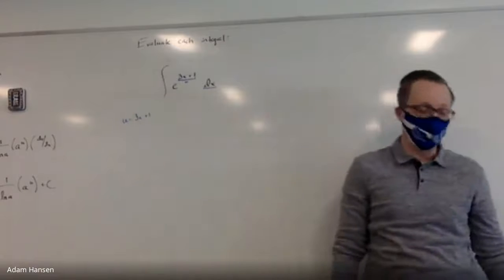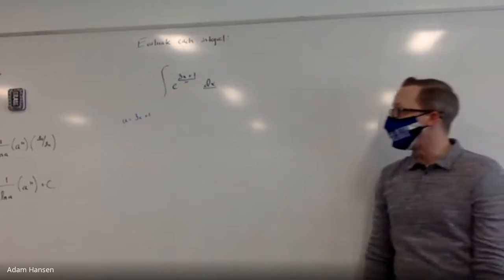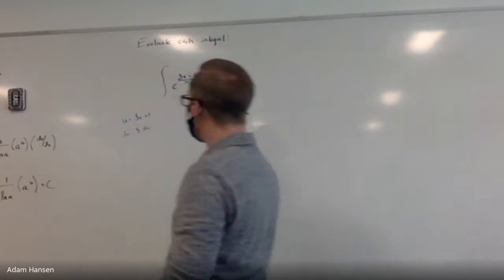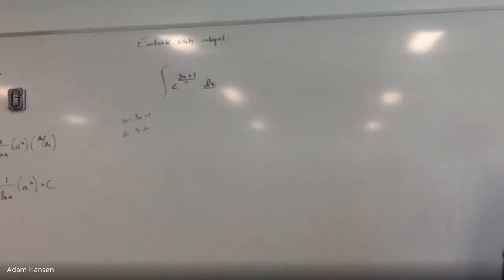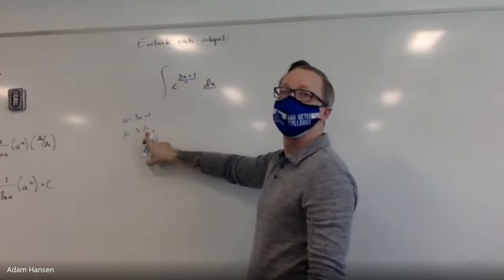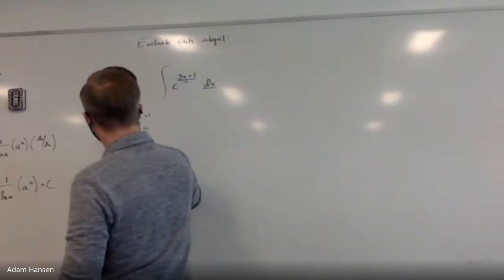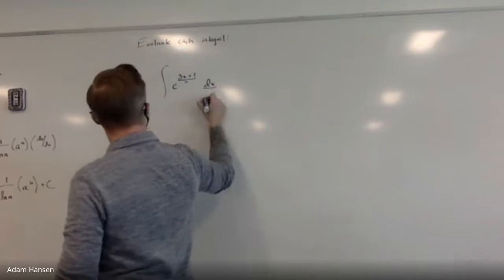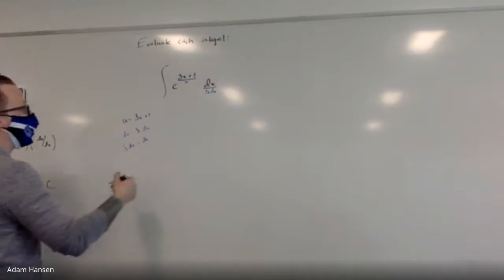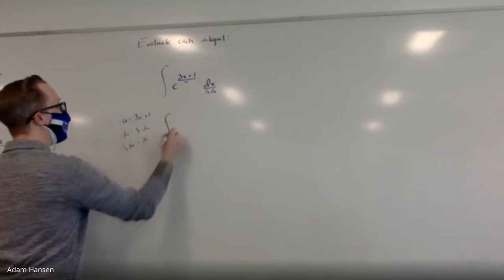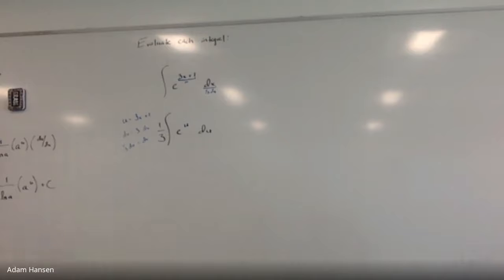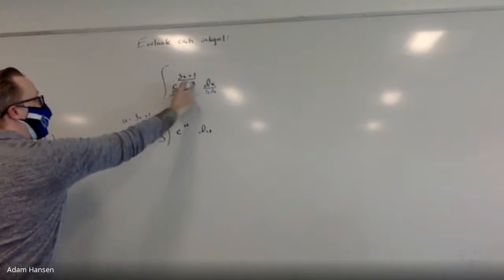Let's come up with a substitution for dx as well. If u is 3x plus 1, I can find du by taking the derivative of each side, which gives du equals 3 dx. Solving for dx: one-third du equals dx. Putting this back in u-du form gives me e to the u du with an extra one-third, since dx was replaced by one-third du and e to the 3x plus 1 was replaced by e to the u.